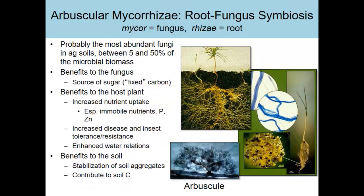Mycorrhizae are probably the most abundant fungi in agricultural soils — between five and fifty percent of the microbial fungal biomass in soil. The benefit to the fungus is growing on roots and taking advantage of excess sugars the plants make. The benefit to the host plant is this expanded root volume, taking up nutrients especially phosphorus and zinc, feeding the plant. It's been associated with increased plant disease and insect pest tolerance or resistance, and it helps with water relations in the plant.